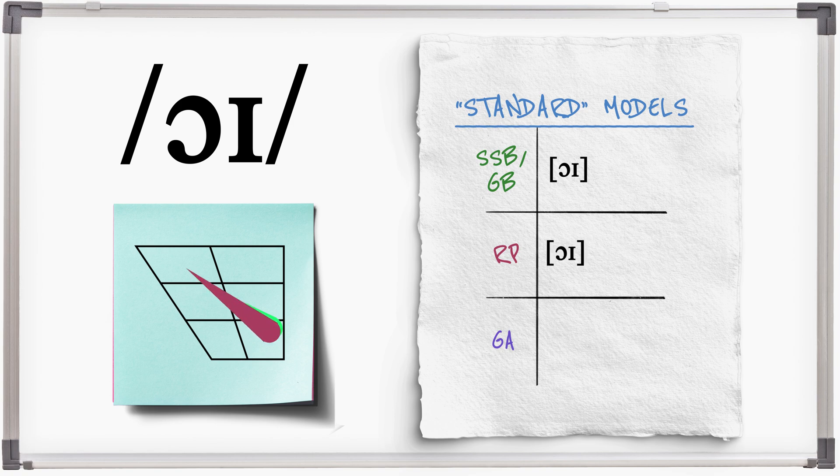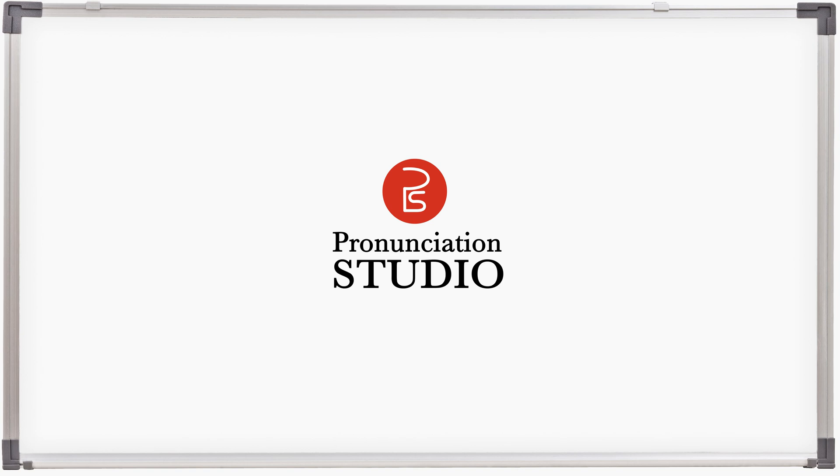In old fashioned RP an unrounded central first element is possible. In General American, it's OI: avoid noise.